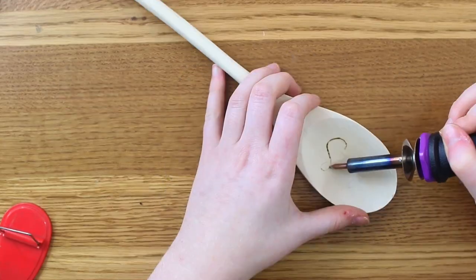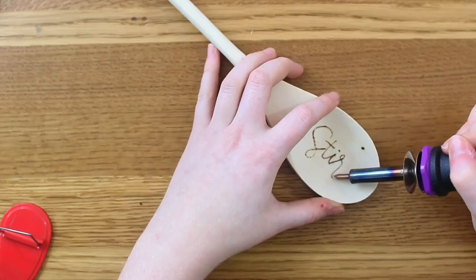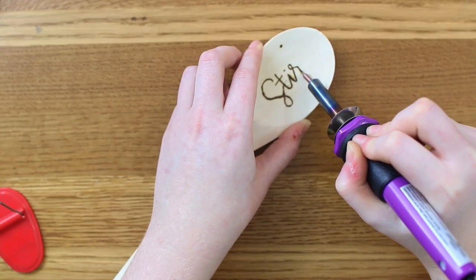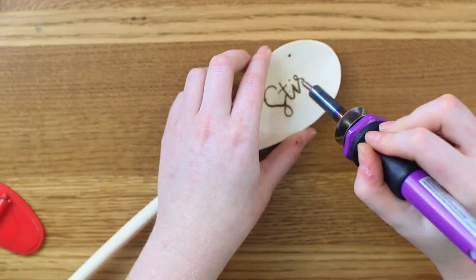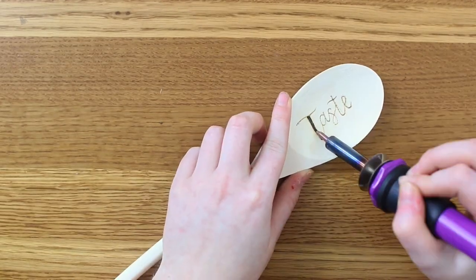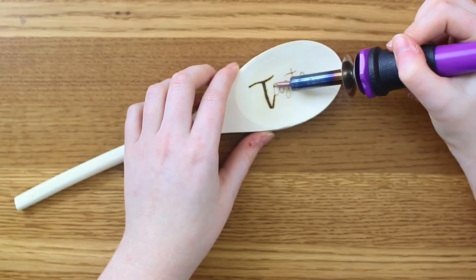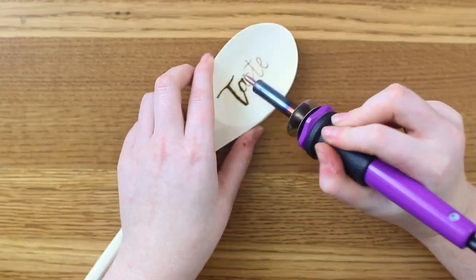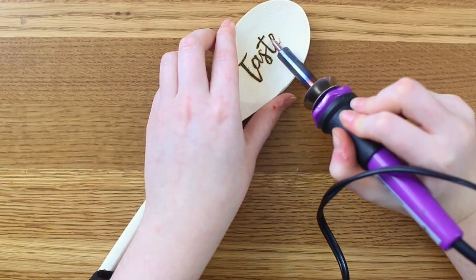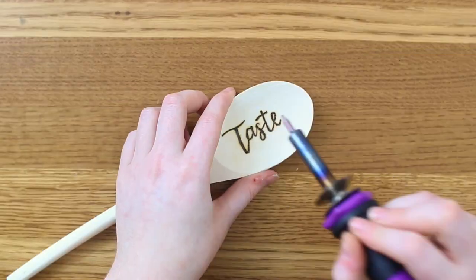Then I wanted to do three as a set that I thought would be adorable, so I did stir, mix, and taste. The taste one was a little bit smaller than all of them. You've got to be very careful doing this because it's very easy to get off of your lines that you wrote out and just mess up the whole thing.